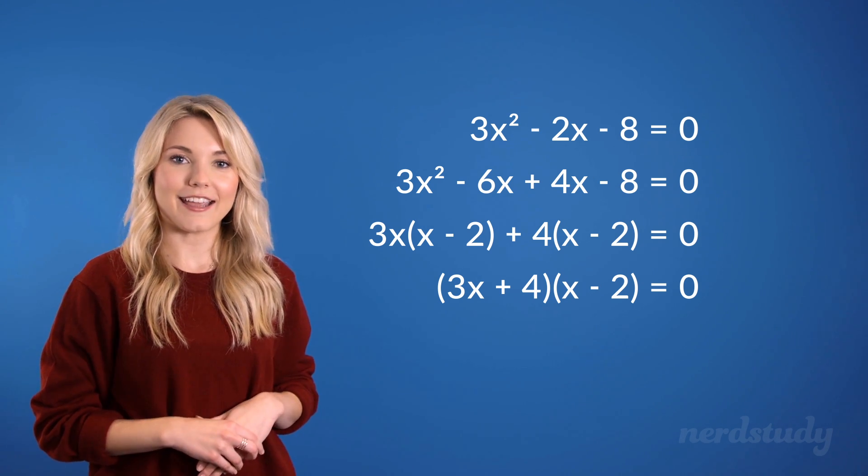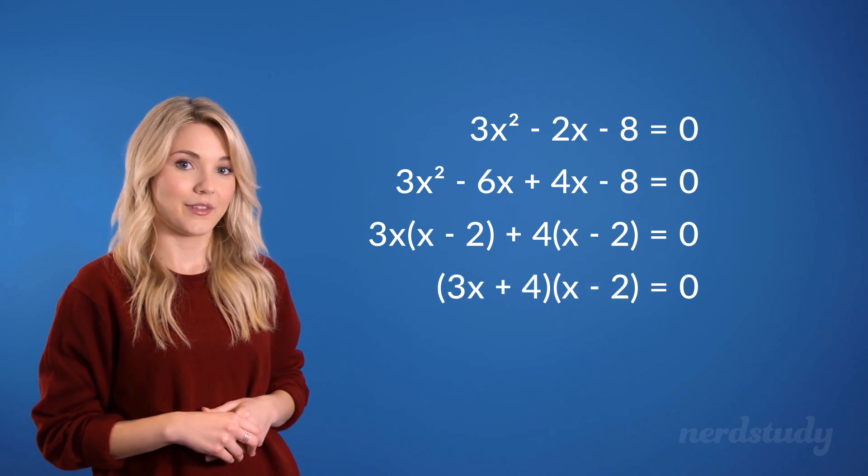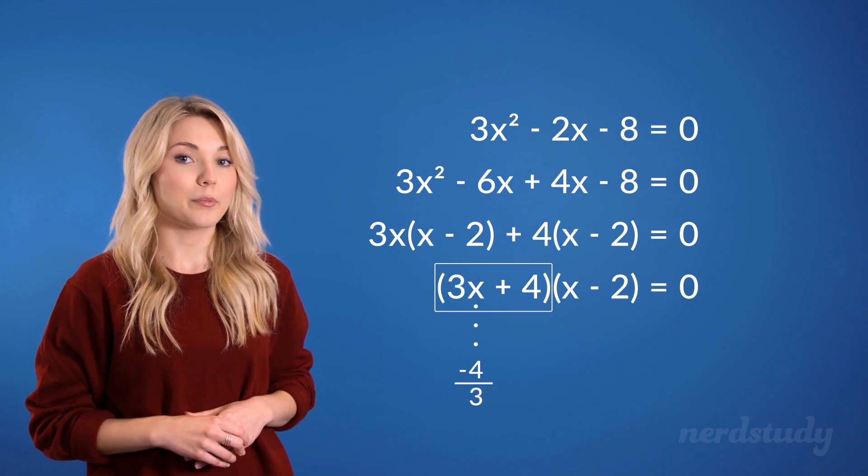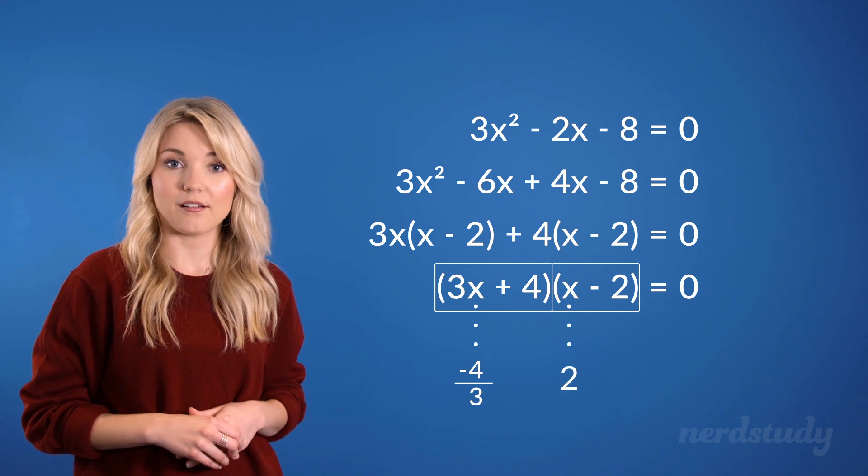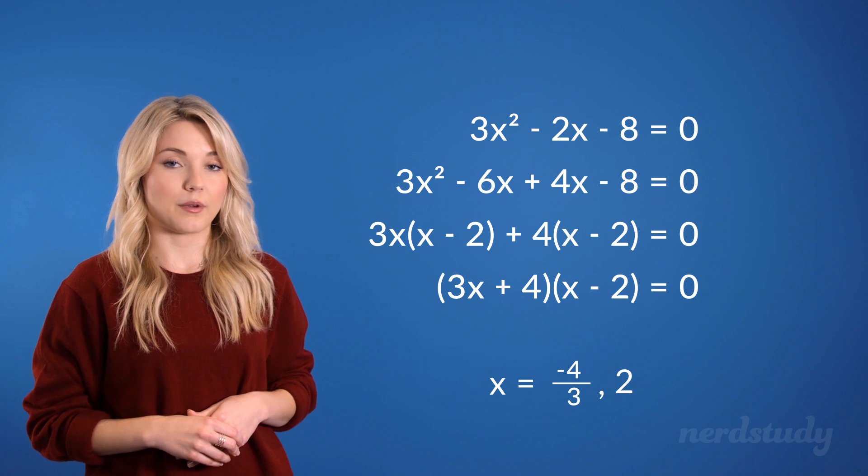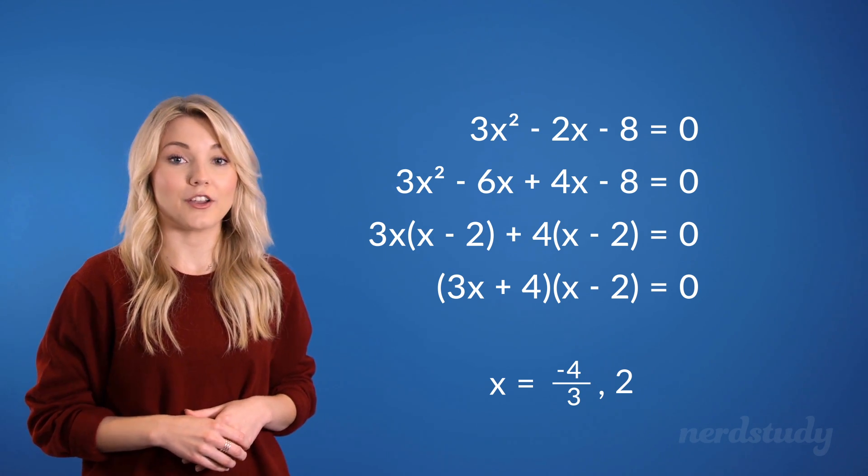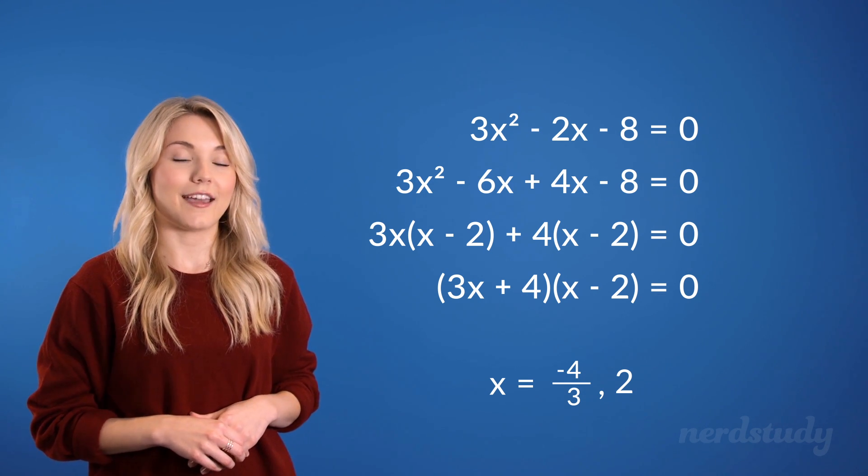From here on, it's simple to find an x that leads to a 0 either here or here. For this one, we've got an x of negative 4 over 3 that would produce a 0, and for this one, an x of 2 would produce a 0. So x equals negative 4 over 3, or 2. So that's how we would find our solution from a quadratic with an a that is not equal to 1, given the assumption that it can be factored.